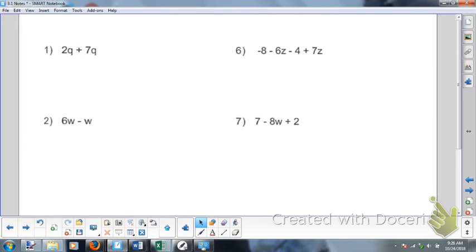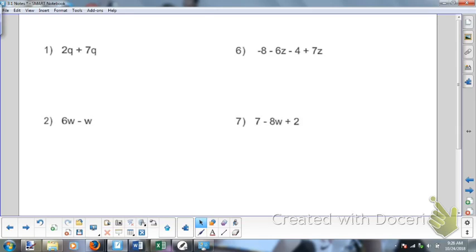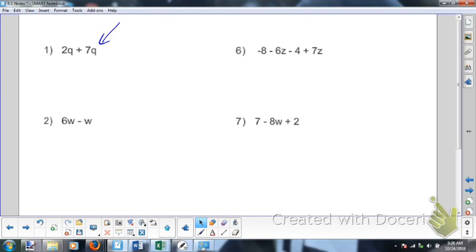What we have here is we are collecting like terms. So like terms are any combination of variables and numbers that are together with multiplication or division.